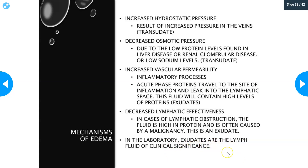Let's talk about the mechanisms of edema — what can cause edema to form. There are four distinct mechanisms. The first is increased hydrostatic pressure, meaning increased pressure in the veins — a fluid overload. There is too much volume in the veins and therefore fluid escapes into the tissue and into the lymphatic system. This type of edema would be a transudate.